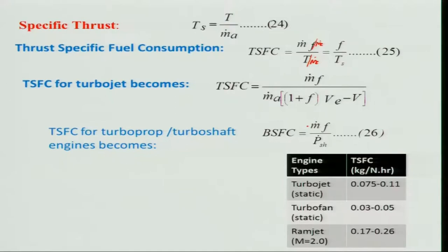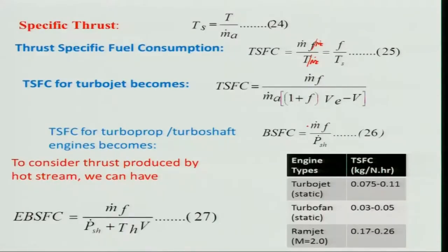For turbo-prop engines, some thrust is obtained by expanding gas in the exhaust nozzle, so we need another parameter: Effective Brake Specific Fuel Consumption (EBSFC). This accounts for both the shaft power and the hot jet thrust: EBSFC = ṁ_f / (P_sh + T_h · V), where T_h is the hot jet thrust and P_sh is the shaft power.